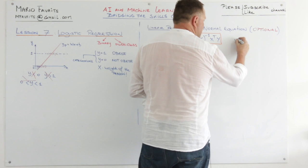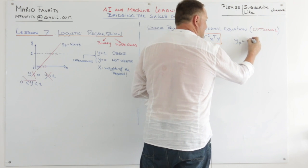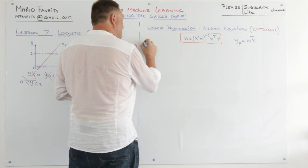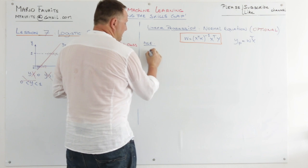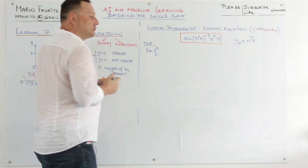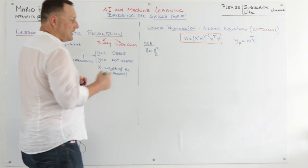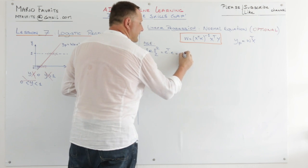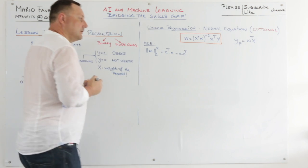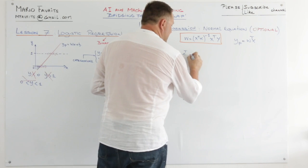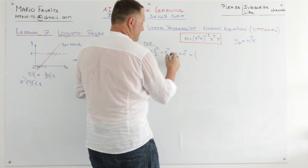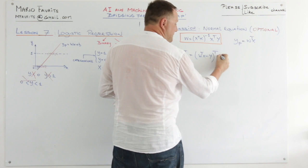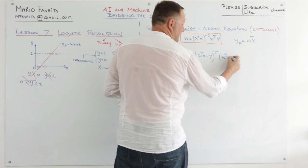Let us define Y_predict as W transpose X — this is the multivariate case. Let us define the error. Remember we have the mean squared error. Let's call that error E and take the L2 norm, as we see in linear algebra. The L2 norm is the vector transpose times the vector. So this means we have W transpose X minus the real Y, transposed, times W transpose X minus the real Y.